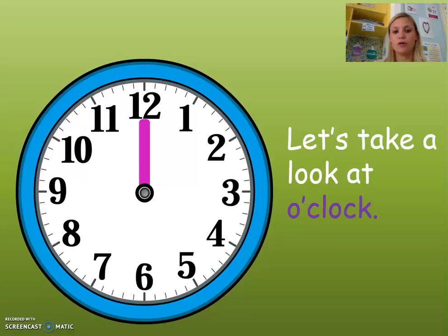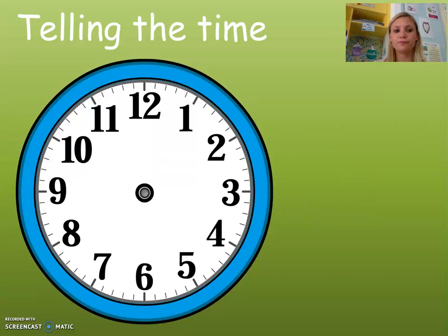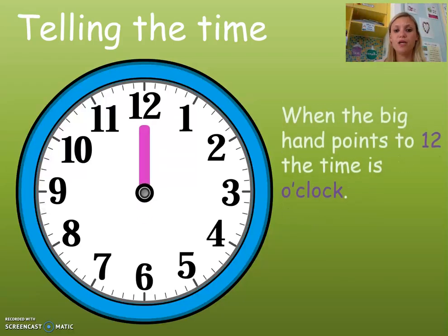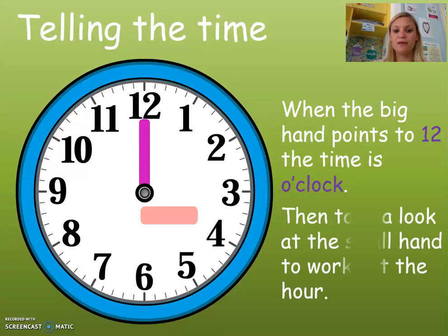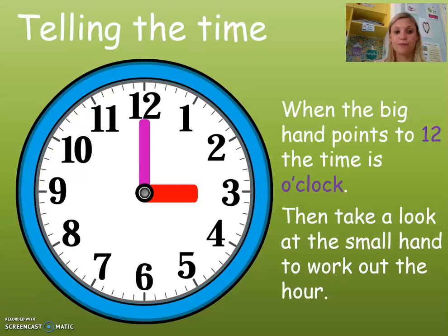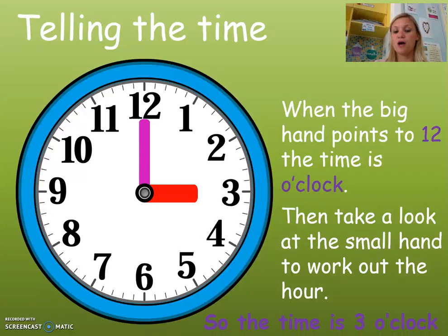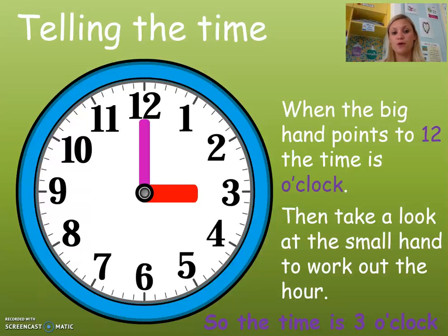Let's take a look at o'clock. When the big hand points to the 12, it is always known to be o'clock. Then we need to look at the small hand to work out the hour. So, the time on this clock is 3 o'clock. We can see the big hand on the 12, so we know it's o'clock.